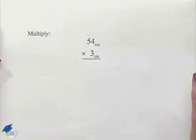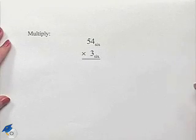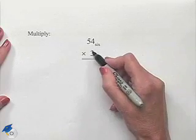Now let's look at a multiplication problem in a different base. Multiply 54 base 6 times 3 base 6. We're going to begin as we would in base 10, in that we'll multiply 3 times 4.